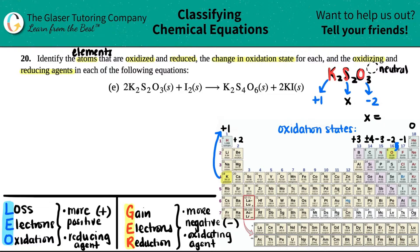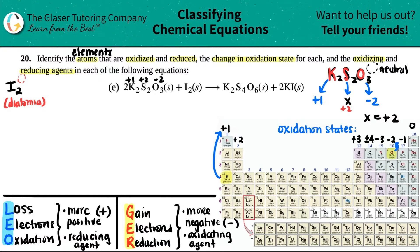So sulfur's charge is +2 — notice it's not -2. To summarize K₂S₂O₃: potassium is +1, sulfur is +2, and oxygen is -2. Now moving to I₂ — that's just iodine, one of your diatomics. There was no charge in the upper right-hand corner, so it's neutral. Diatomics always have a zero charge for their atoms, so iodine in I₂ has a zero charge.